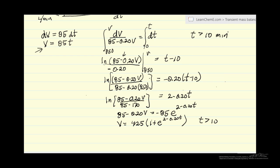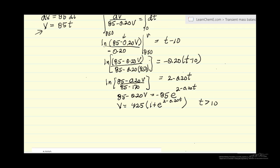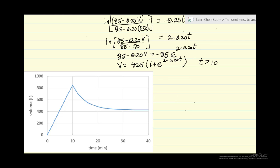I can put this in Excel to plot, and let's look at what the plot looks like. From 0 to 10 minutes, a straight line - volume increases linearly with time. Then once we start the outflow, the volume starts decreasing until it approaches a steady state value, a little above 425 liters in the tank.